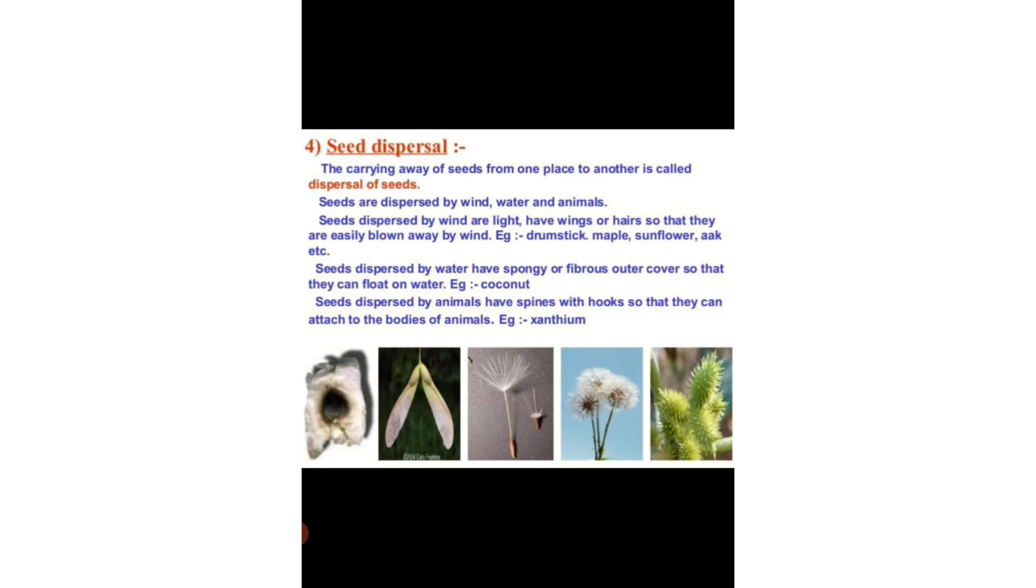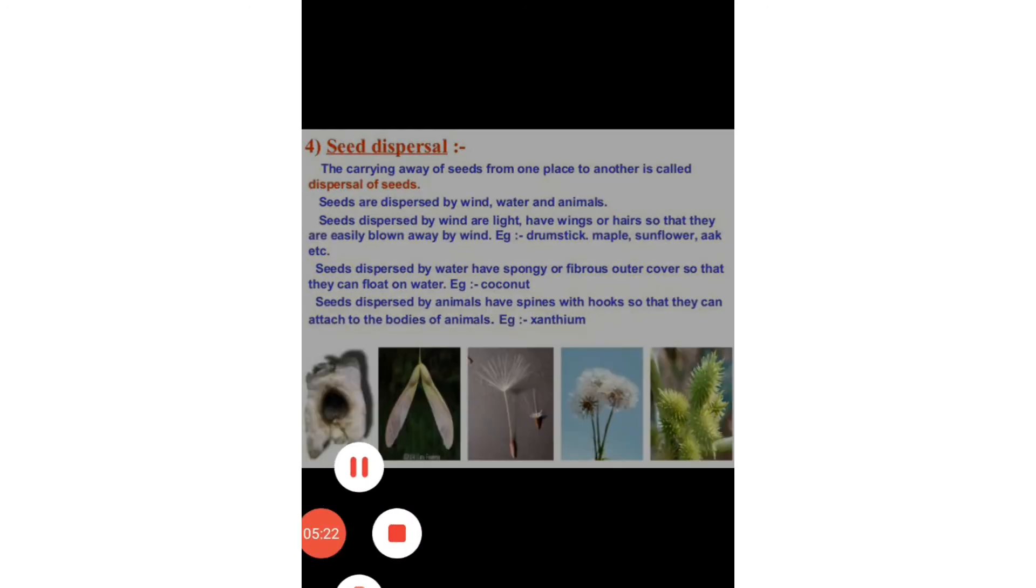Seeds dispersed by animals have spines with hooks so that they can attach to the bodies of animals, for example xanthium. So this is all about our chapter. Hope you have understood the concepts. Thank you.